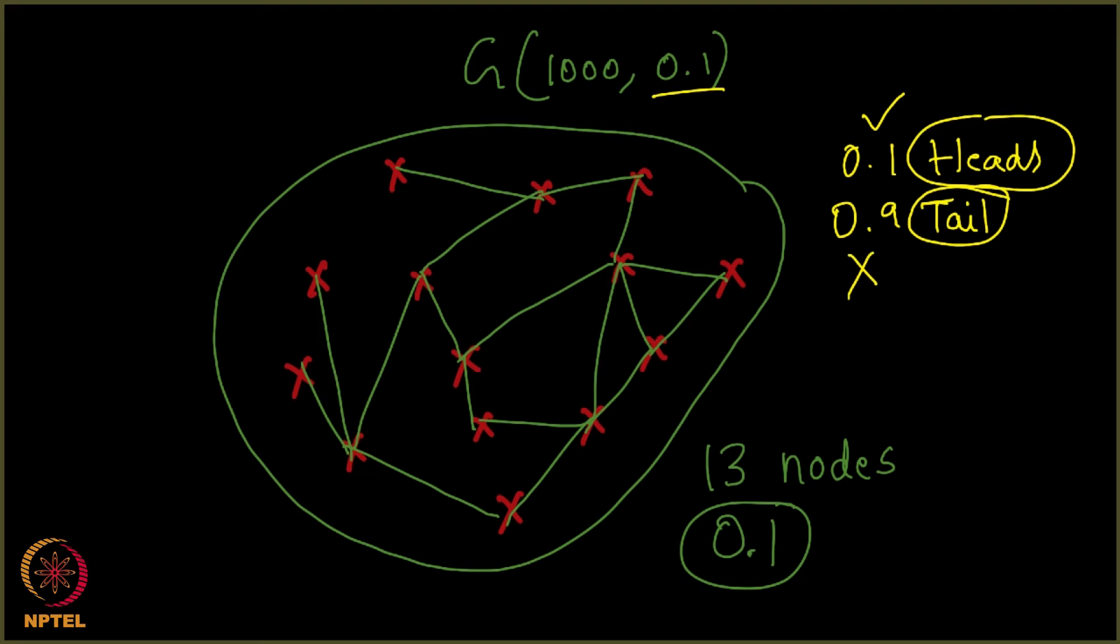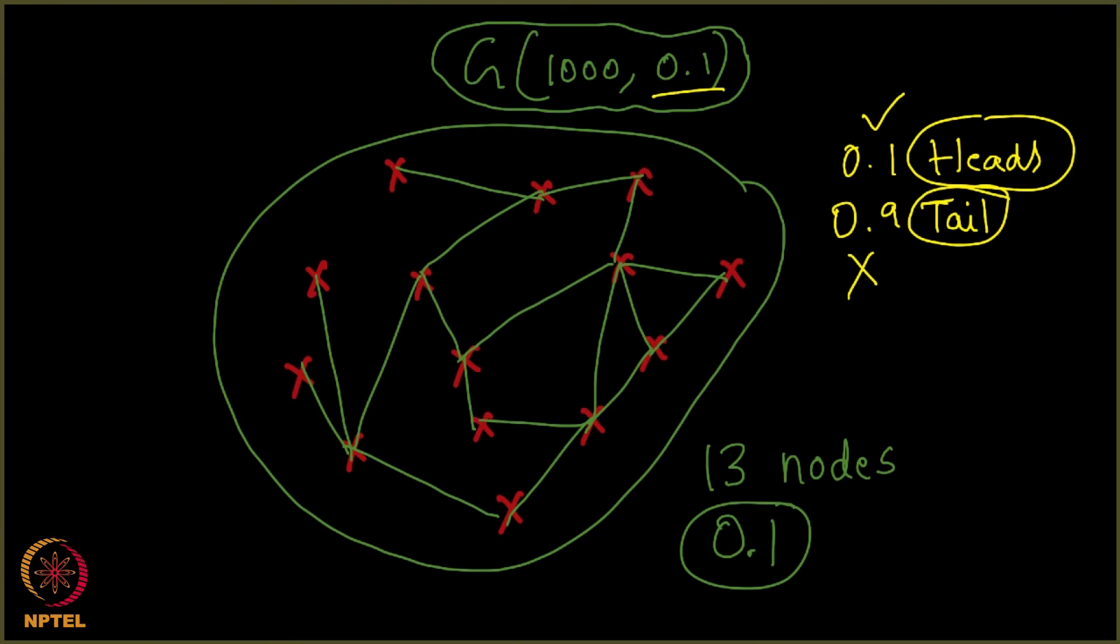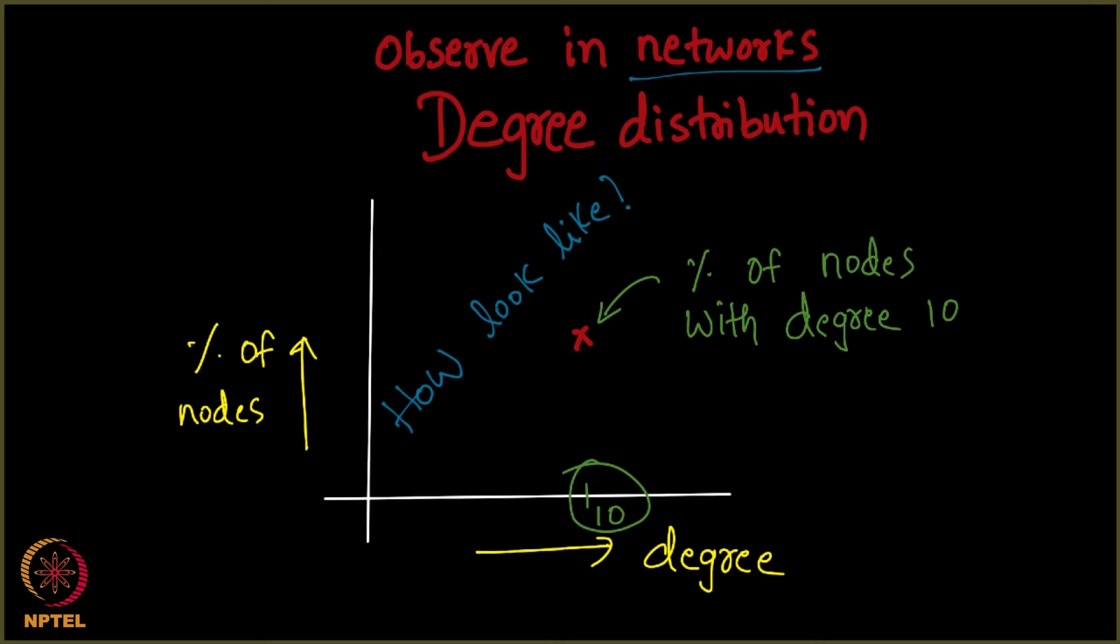I showed you a simple example but what you should be doing is do it for a 1000 node graph right. Do it for a 1000 node graph. Once you finish programming take a 1000 node graph and put edges with probability 0.1 this is called a G of 1000 comma 0.1 and what should you do as you would have guessed compute its degree distribution. We discussed in our previous slide what is a degree distribution. You put degree on the x-axis and you put the percentage of nodes on the y-axis and see how this plot looks like.